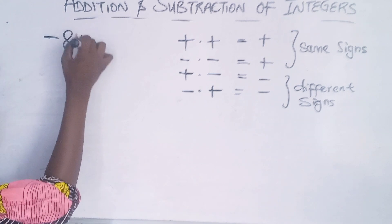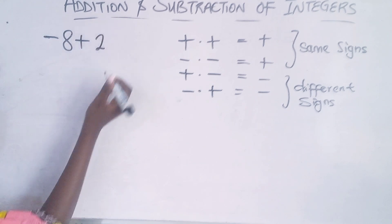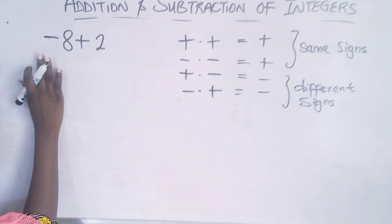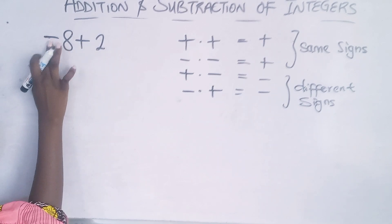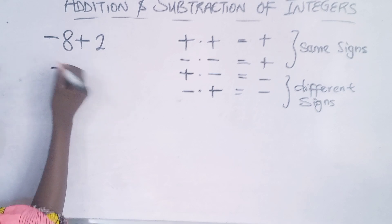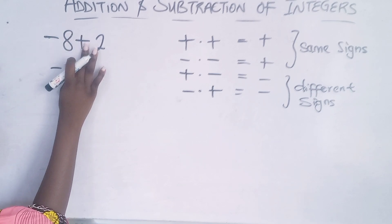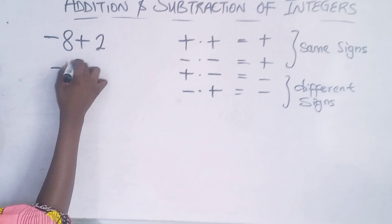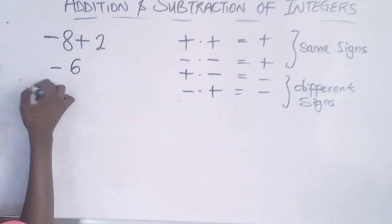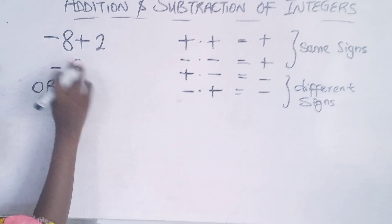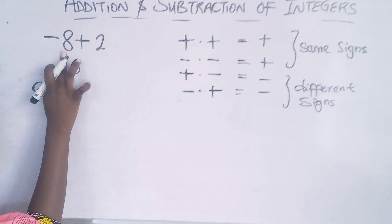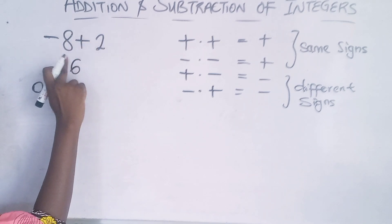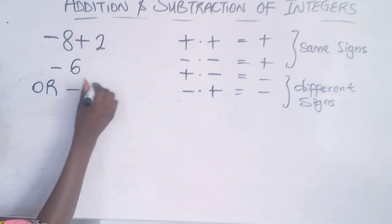Another example: negative eight plus two. The sign in front of the bigger number is minus, so the answer will be negative. Minus times plus is minus, so eight minus two equals six — answer is negative six. Or using the owing method: you're owing eight, you have two, you give two, and you're still owing six.